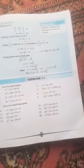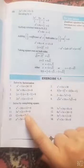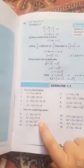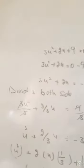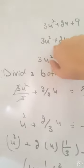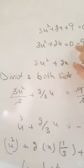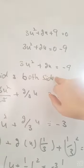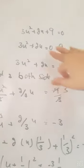Next question we are going to do: 3x² + 2x + 9 = 0. Here I have written the question, 3x² + 2x + 9. How we will solve it? 3x² + 2x = -9, moving 9 to the other side.